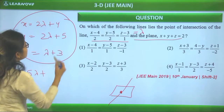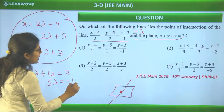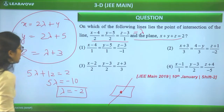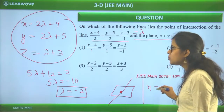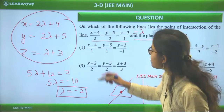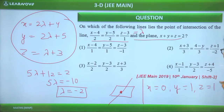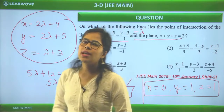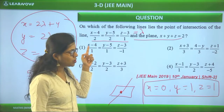Substituting into the plane equation gives 5λ + 12 = 2, so λ = -2. Putting λ = -2 back: x = 0, y = 1, z = 1. So the point of intersection is (0, 1, 1). Now we check which option line passes through this point — we substitute x = 0, y = 1, z = 1 into each option's line equation and check if all three ratios are equal.